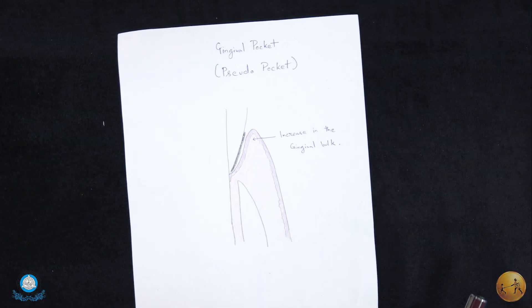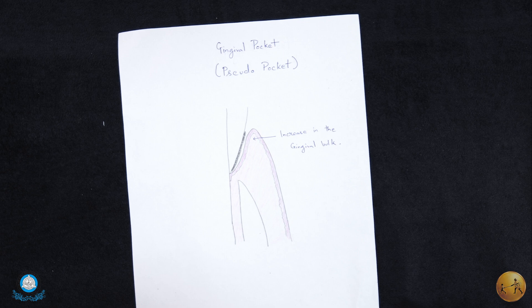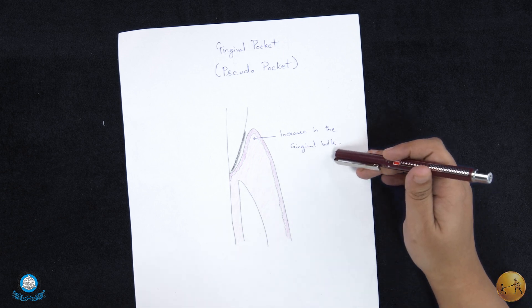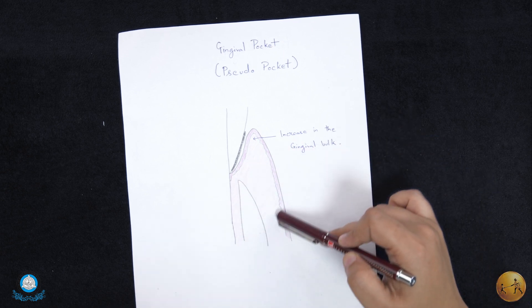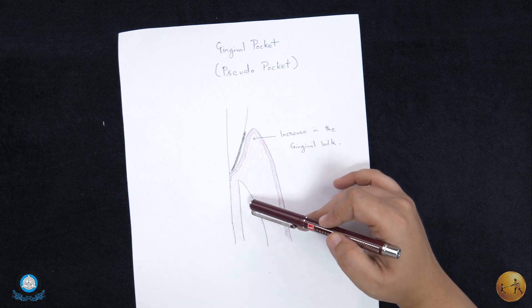First we have gingival pocket, also known as pseudopocket. It occurs due to increase in the gingival bulk without the destruction of the supporting periodontal tissue.